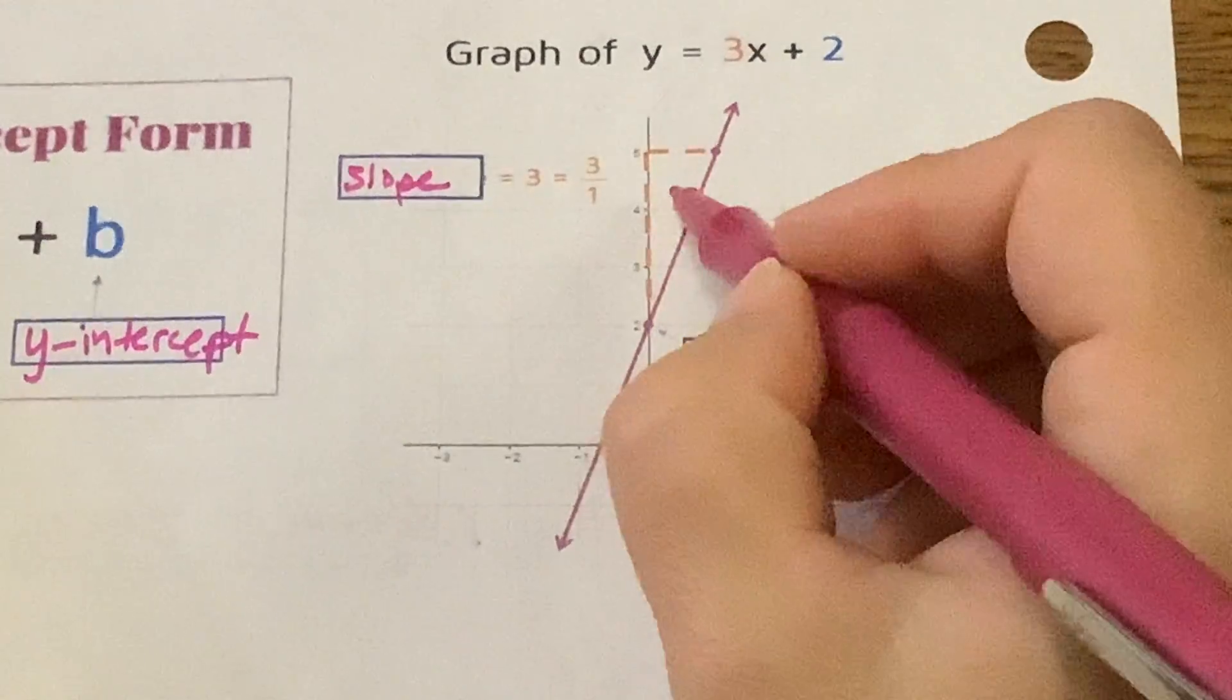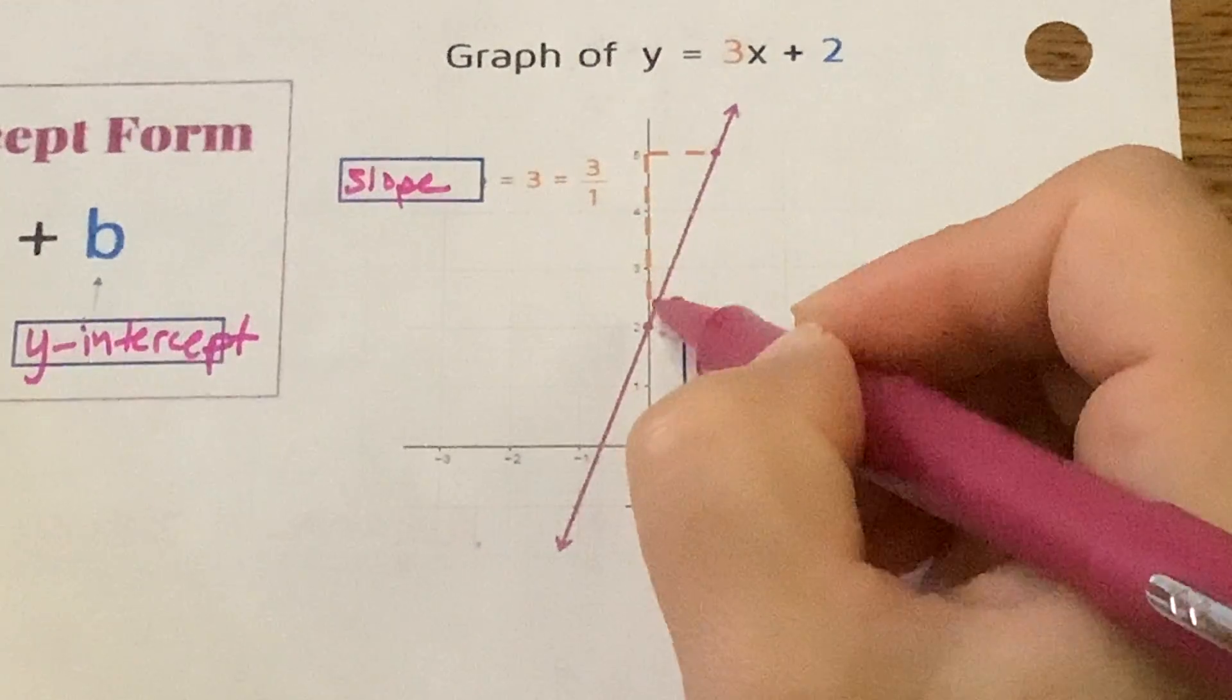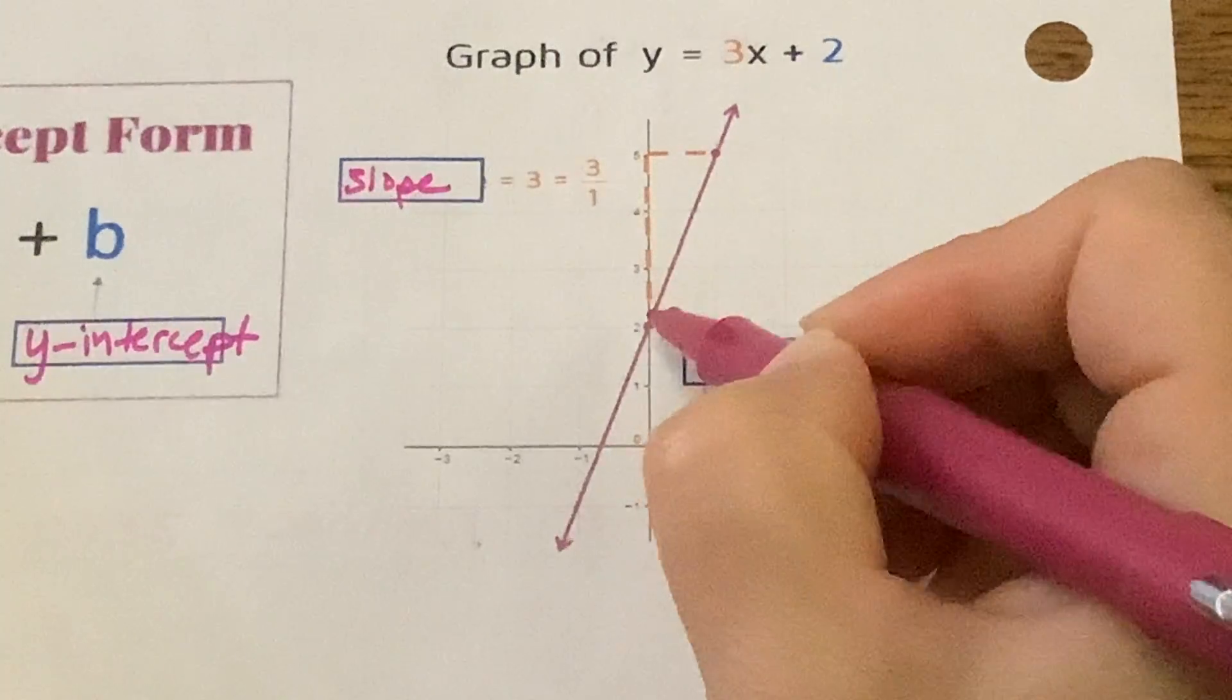The slope is going to be formed by this triangle. Do you see the triangle it's forming? Okay.